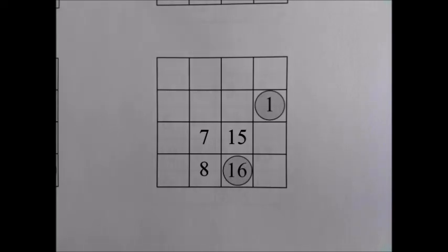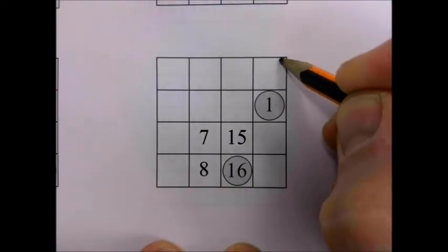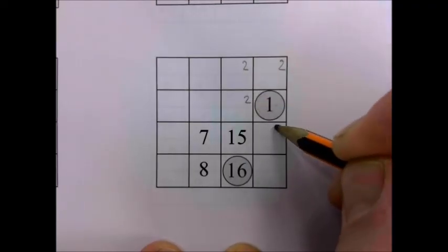You can see where the difficulties would come from. If one is here, we could have two... two... two... or two here.